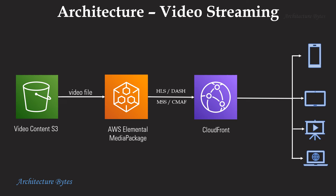The advantage of using CloudFront is that it can cache media segments at edge locations and deliver content faster. Protocols like HLS and DASH are adaptive bitrate streaming protocols — the output stream is made up of a series of media segments each up to 10 seconds long. This allows switching between various stream qualities easily depending on fluctuating internet speeds or user preferences.